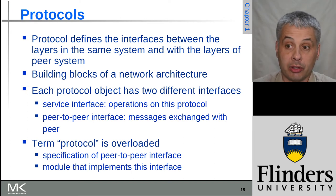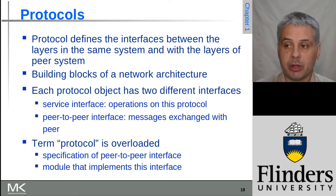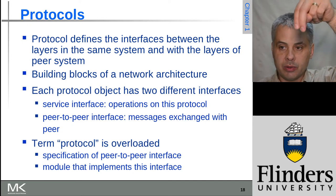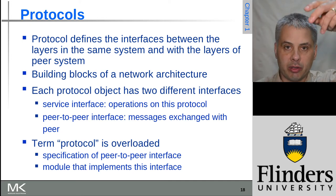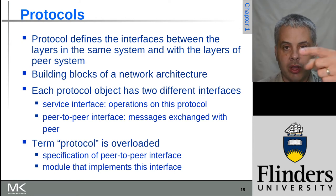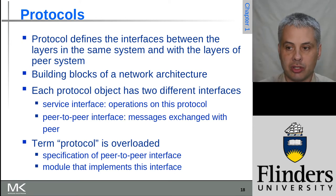There are two interfaces for each protocol object. There is the service interface, where the layer above comes in and requests something, and then there is the peer-to-peer interface between instances of the protocol, which accesses the layer below to achieve that peer-to-peer communication.